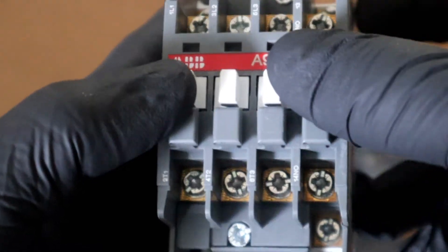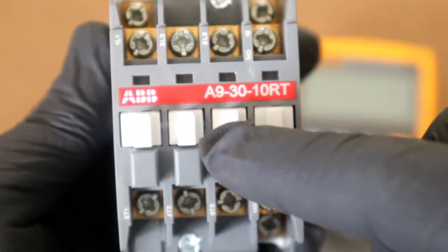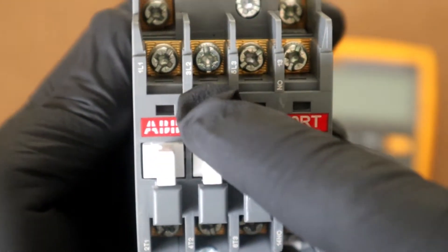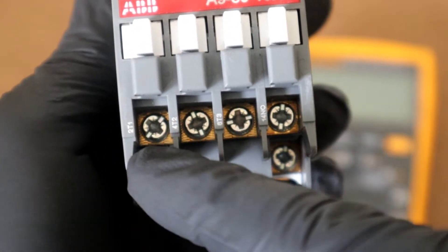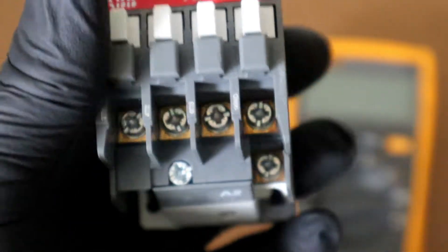On the top here we have our high current contacts L1, L2, L3. On the load side we have our T1, T2, T3.